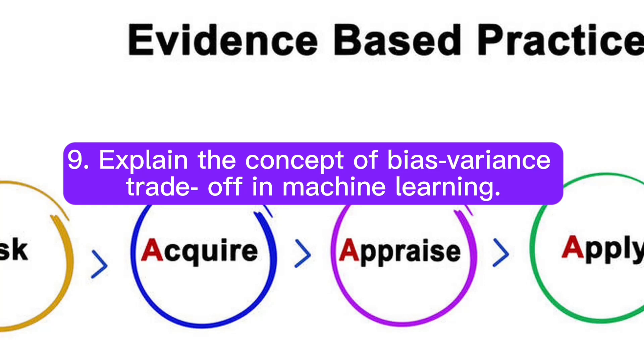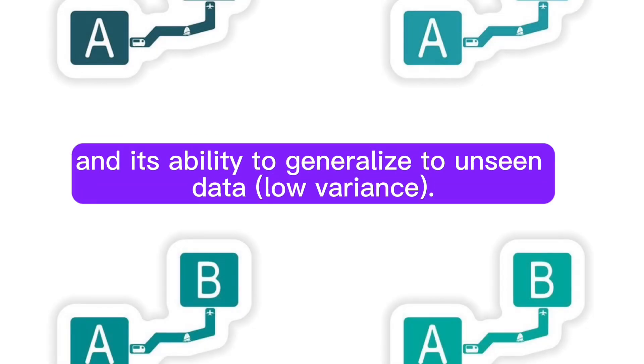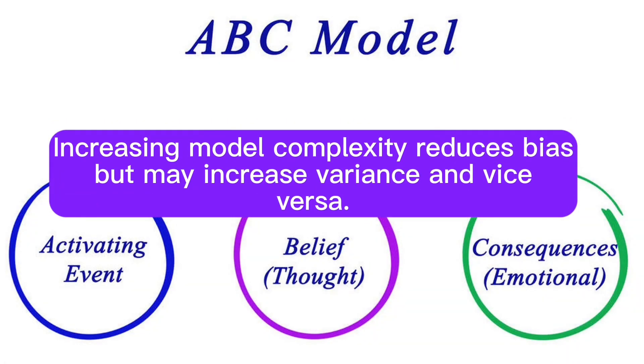Question 9: Explain the concept of bias-variance trade-off in machine learning. Answer: The bias-variance trade-off refers to the balance between a model's ability to fit the training data (low bias) and its ability to generalize to unseen data (low variance). Increasing model complexity reduces bias but may increase variance and vice versa.